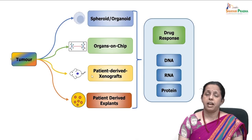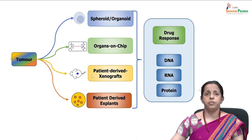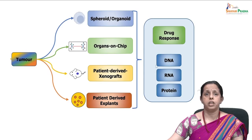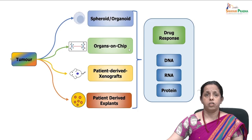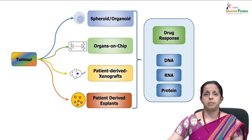Many studies and the whole pharma industry is going in this direction. The different models used here are the spheroid, the organoids or organ-on-chips, which are very well characterized, the patient-derived xenografts, your mouse models, and the patient-derived explants.